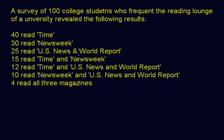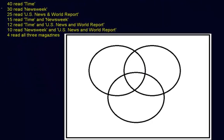We've got three sets: Time, Newsweek, and U.S. News and World Report. Let's pull up our Venn diagram and label each set. We'll call this one T for Time, this one Newsweek, and this one down here U for U.S. News and World Report.